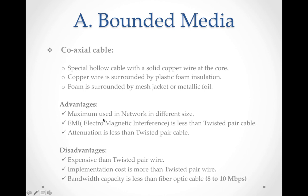Features: coaxial cable is maximum used in networks of different sizes. EMI here is less as compared to twisted pair cable. EMI means electromagnetic interference — interference from external signals. It is less here because the number of protection layers is more than in twisted pair, so our data is more protected and external signals have less effect on the internal signal.